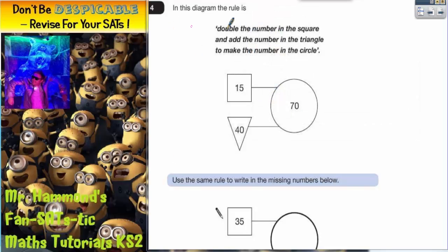Question 4. In this diagram the rule is double the number in the square and add the number in the triangle to make the number in the circle.